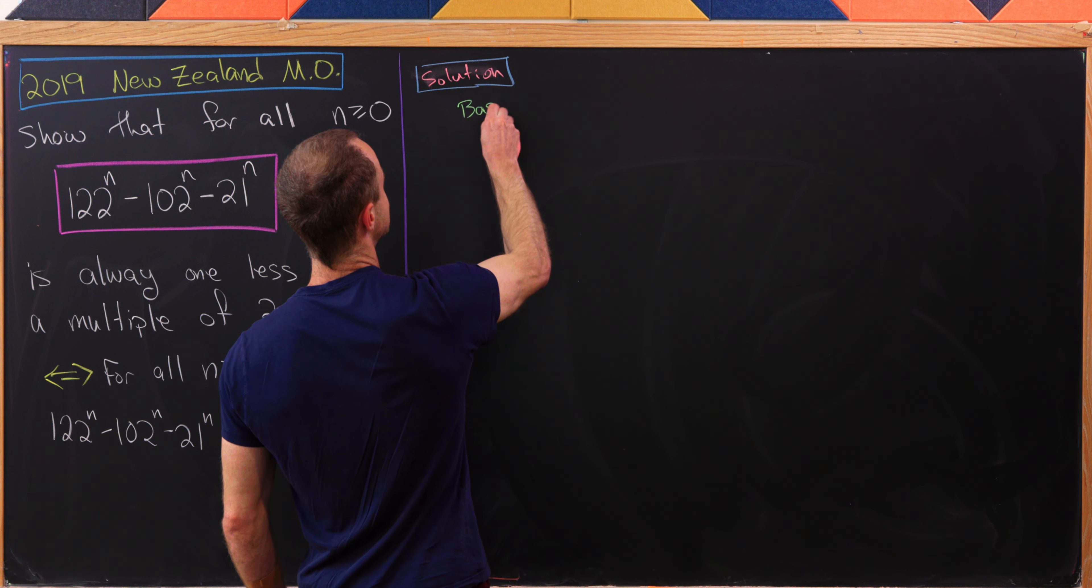And then you could maybe do n equals 1 just as a test case as well, but all you really need to do is n equals 0. So let's see, the expression in this case turns into 122^0 - 102^0 - 21^0. But that's clearly equal to 1 - 1 - 1, which is not only congruent to negative 1 mod 2020, but it's actually equal to negative 1 just as is, which itself is congruent to negative 1 mod 2020.